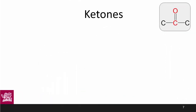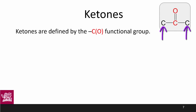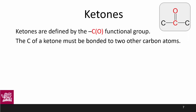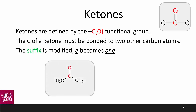Ketones are very similar to aldehydes except the hydrogen on the terminal aldehyde is replaced by a carbon. So this is a C double bond O that is in the middle of a chain. Just like aldehydes had to be on the end of a chain, ketones cannot be on the end of a chain. With a ketone, the suffix '-e' of '-ane', '-ene', or '-yne' becomes '-one'. The smallest example of a ketone is propanone, more commonly known as acetone, which you may have encountered in nail polish remover.